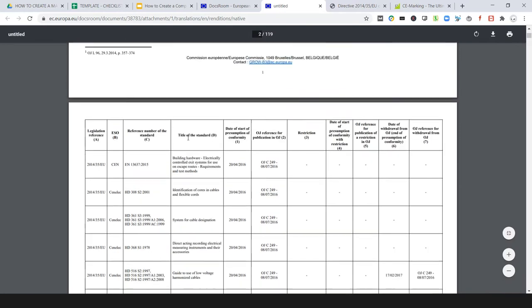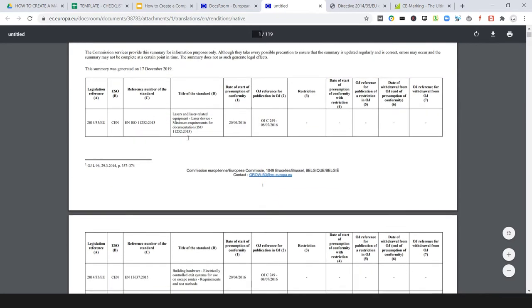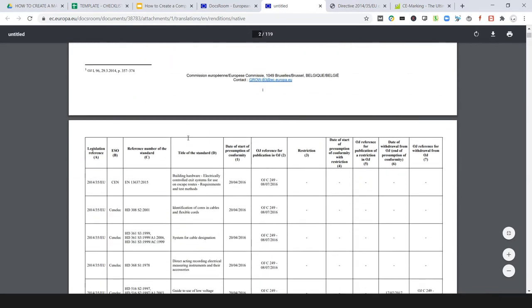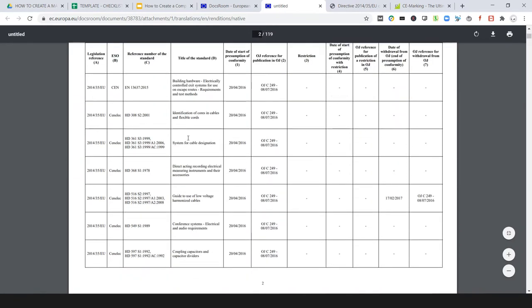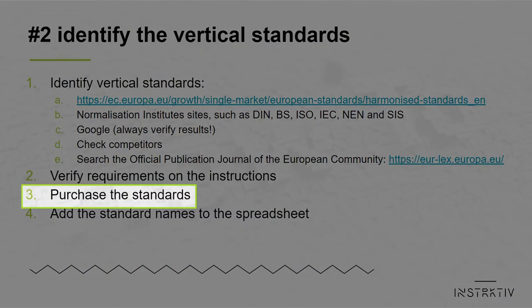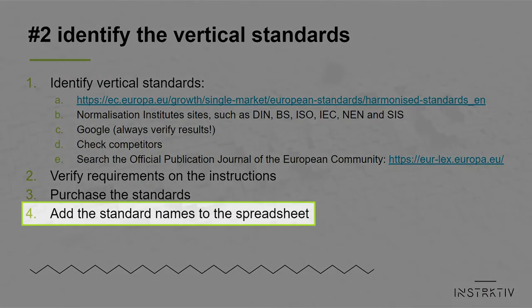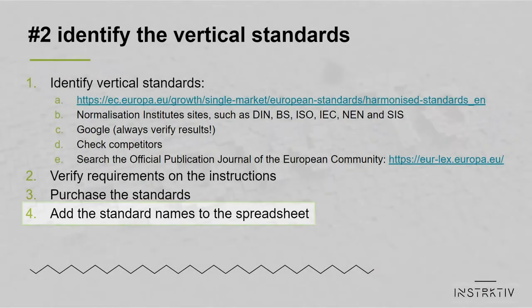Check if the table of contents contains a section called 'instructions for use,' 'instructions,' or 'marking and instructions.' If so, purchase the standard and add the standard names to the first column of the spreadsheet.